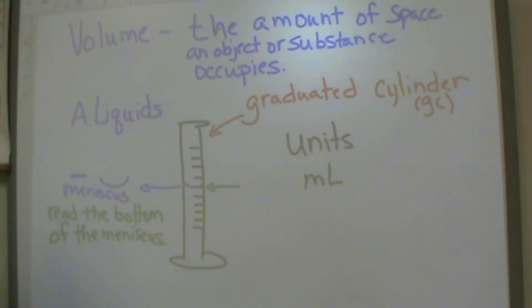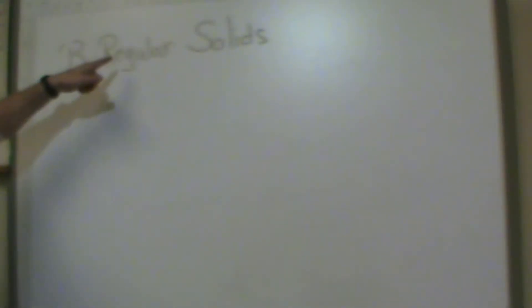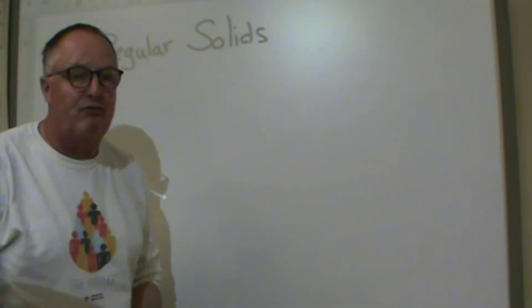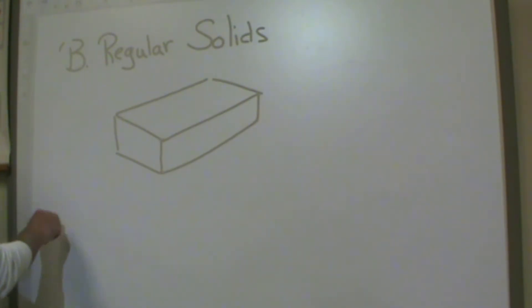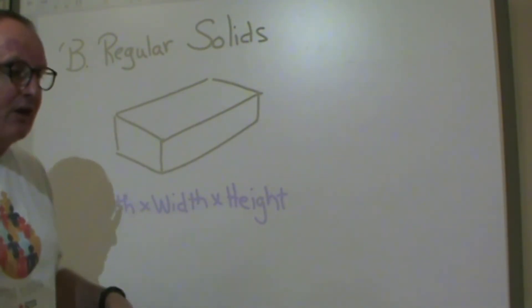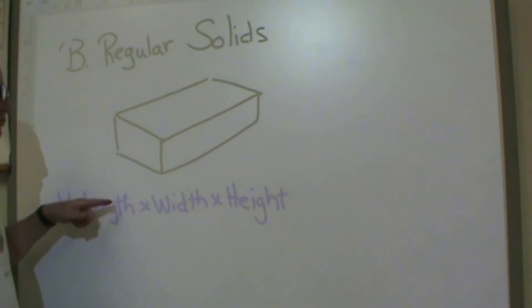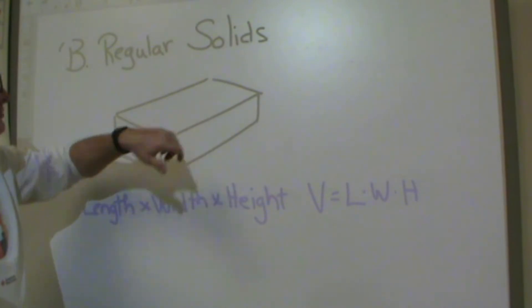Now the second type is a regular solid. Regular solid is anything that we have a formula for. We're going to talk about just cubes and rectangular prisms and the formula you're familiar with, I'm sure you've done it in math.